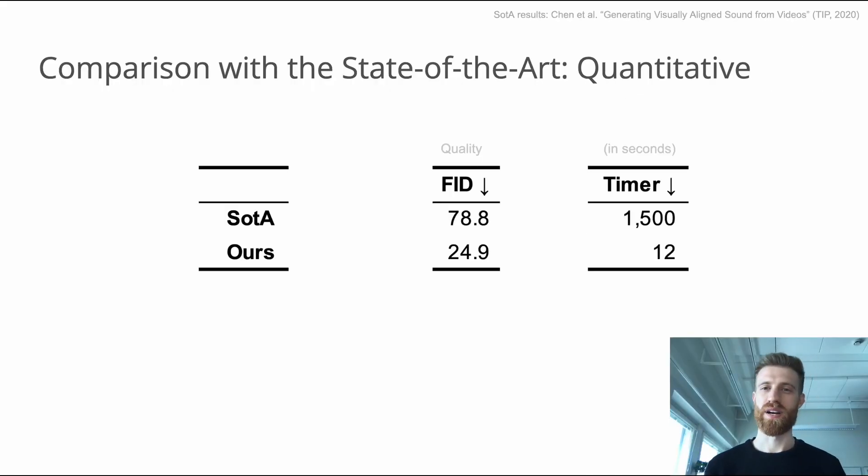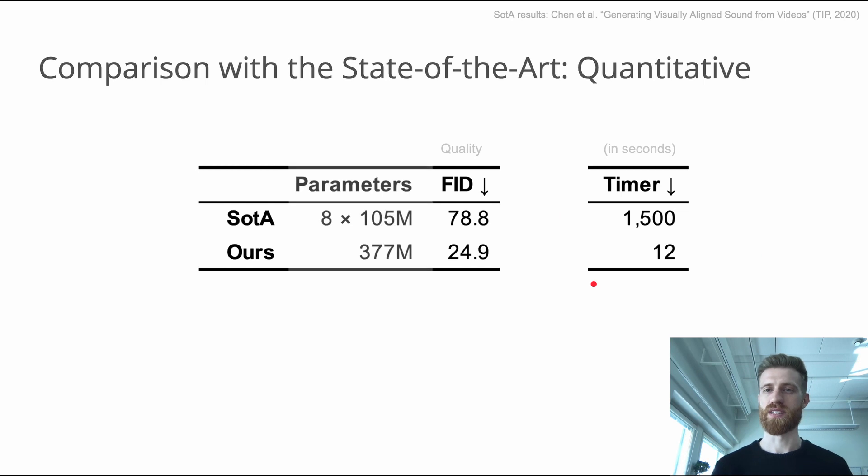In addition, we can compare the models quantitatively. Our model outperforms the baseline by a large margin in terms of fidelity and generation speed. Notice that our model is trained on all classes at the same time and has fewer parameters in total while being on par in terms of relevance.